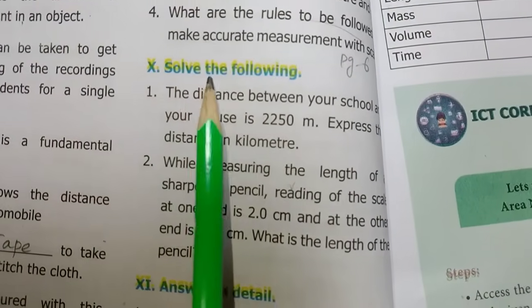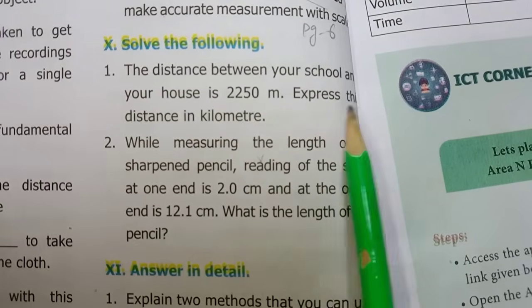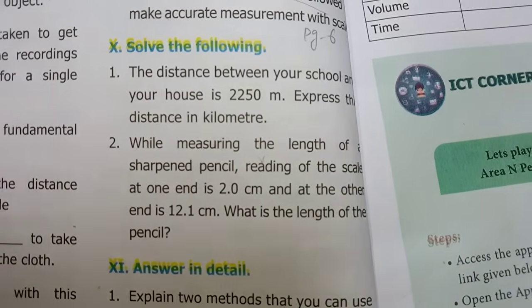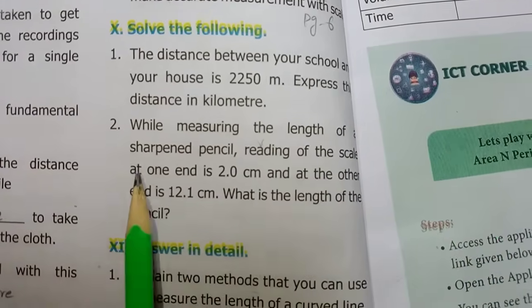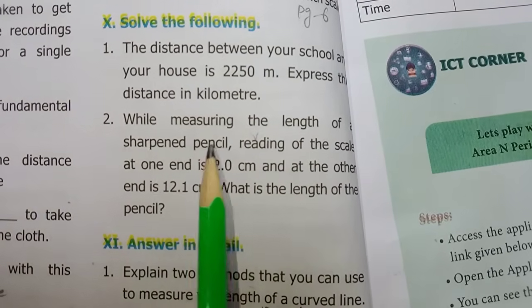Moving to Roman numeral X: Solve the following. The distance between your school and your house is 2250 meter; express this distance in kilometer. 1000 meter equals 1 kilometer, therefore 1 meter equals 1 by 1000 kilometer; so 2250 meter equals 2.250 kilometer.